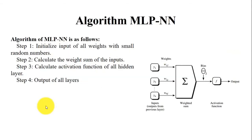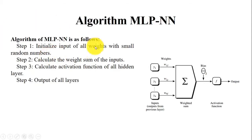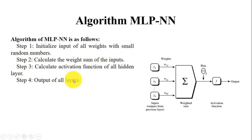The algorithm of the multi-layer perceptron neural network starts by initializing all weights with small random numbers. After that, calculate the sum of all inputs as a weighted sum. Then calculate the activation function of all the hidden layers, and the outputs of all layers are combined to form a prediction.